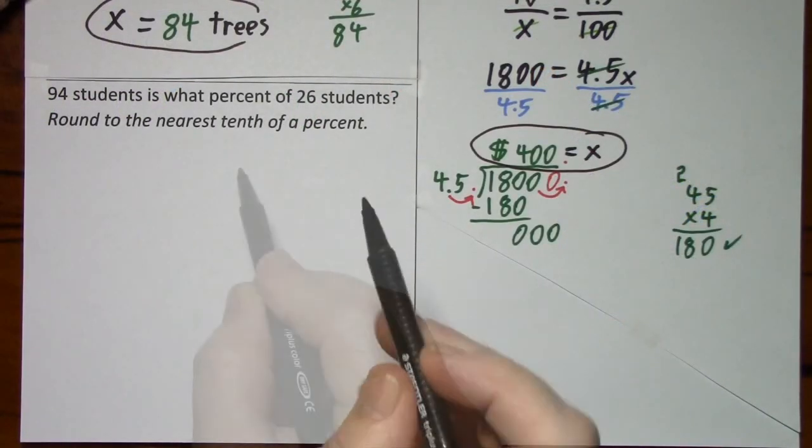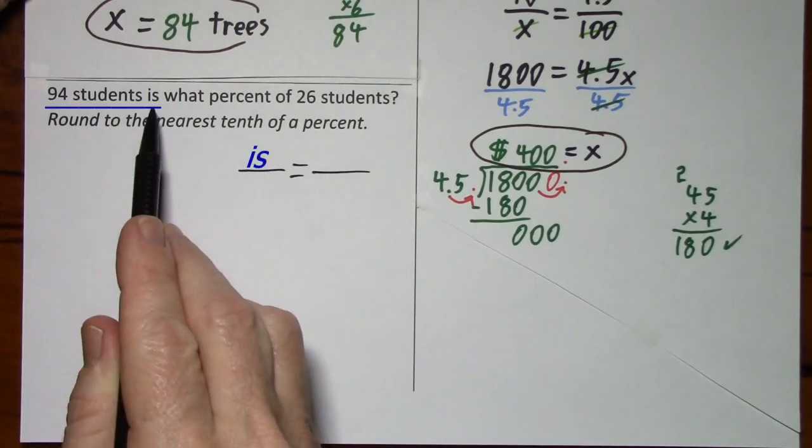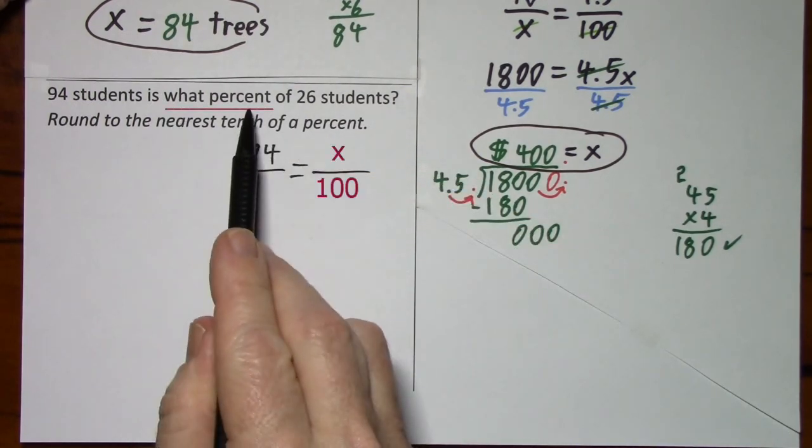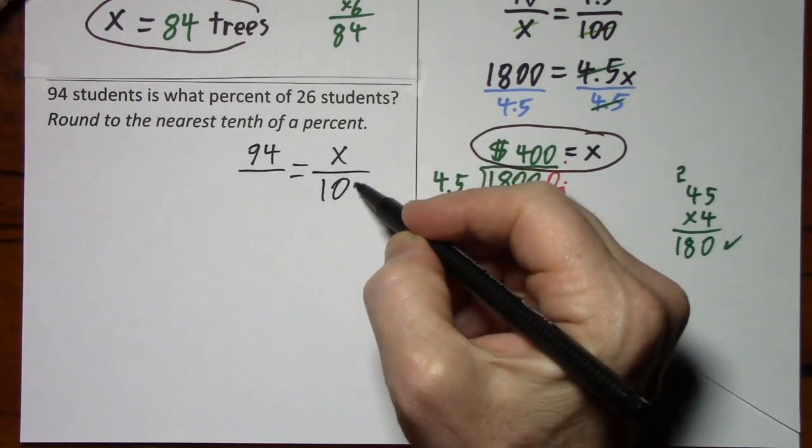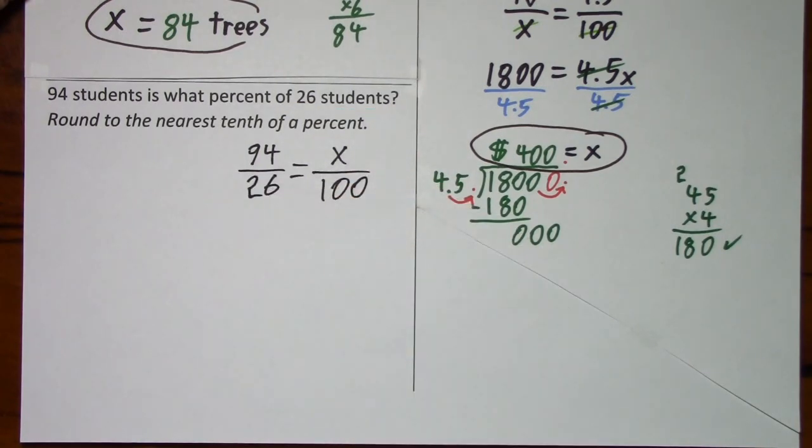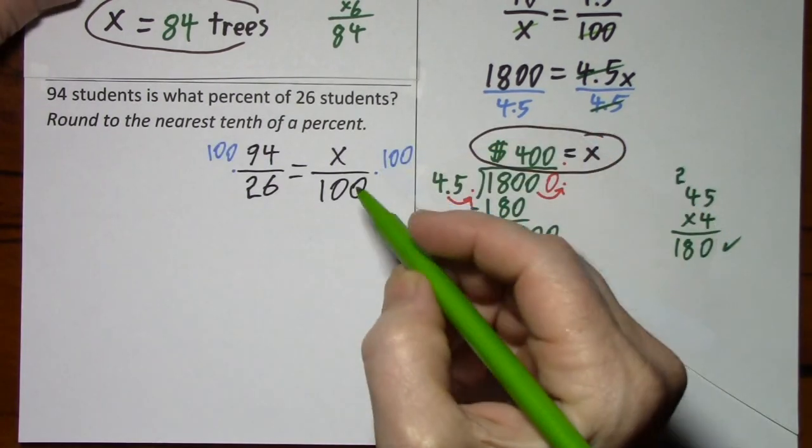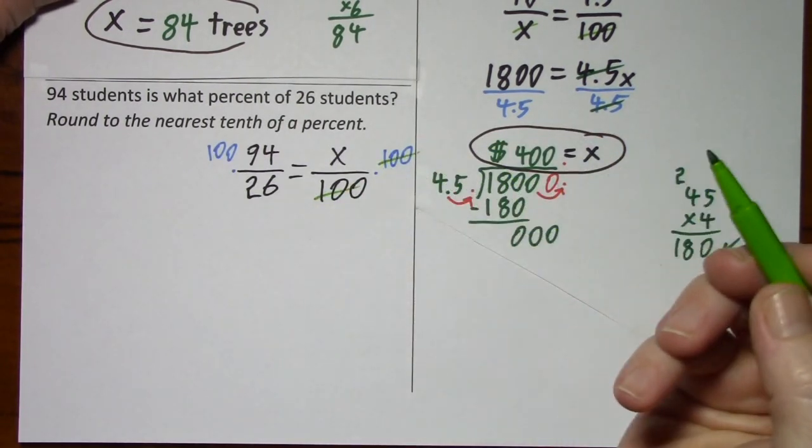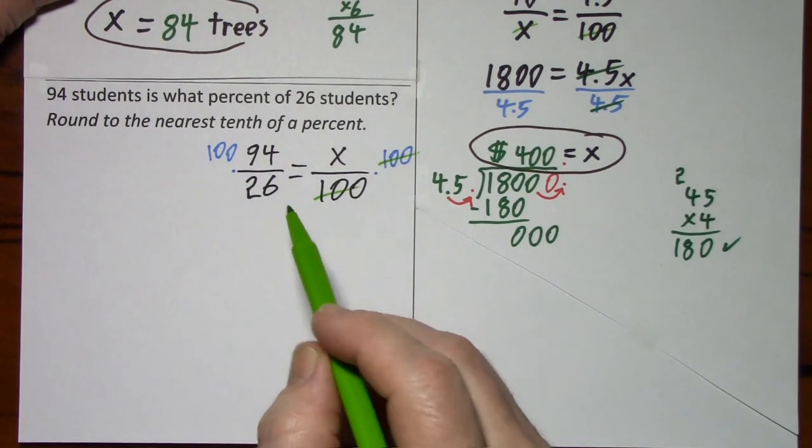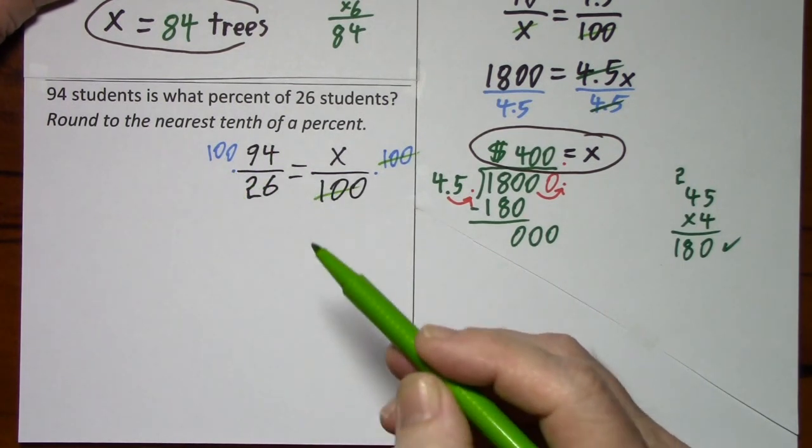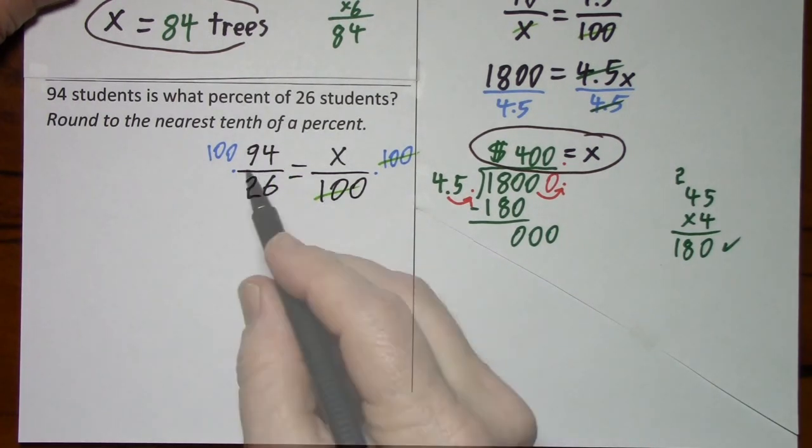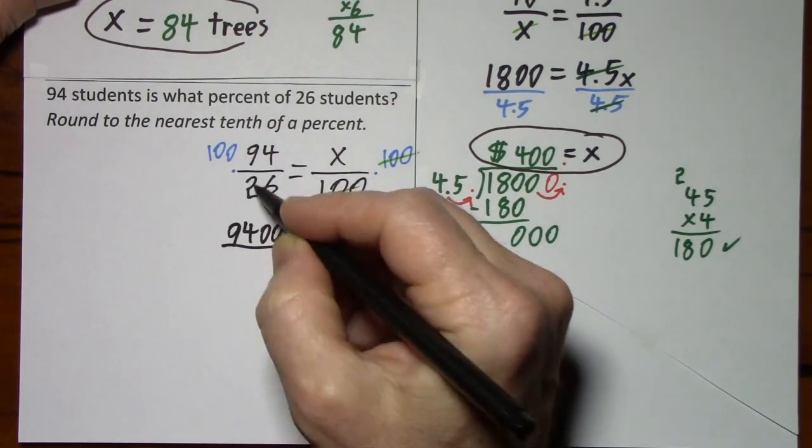Looking at our last problem here. So 94 students is, puts 94 in the numerator. What percent? x over 100. Of 26 students. So 26 sits in the denominator. We need to get rid of this 100. On this side, divide by 100, divide by 100. Over here we could do some reducing. You have an even number over even number. Even number as well. So I could start cutting some things in half. But 94 is not real easy to cut in half. I'm just going to go ahead and deal with what we've got. So 94 times 100. Over 26. That's our x.